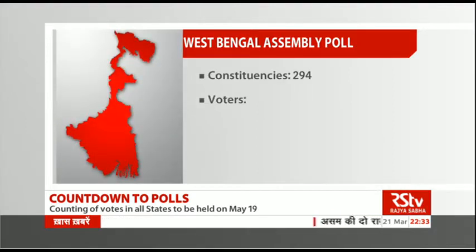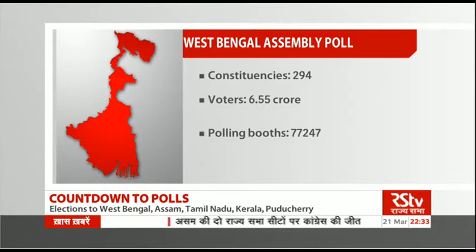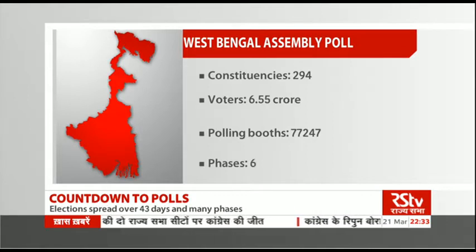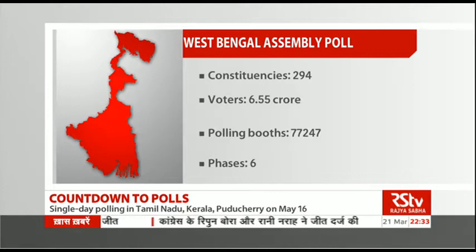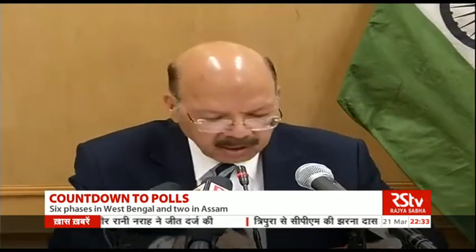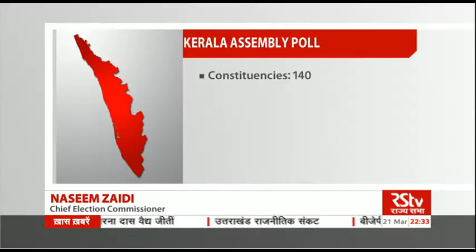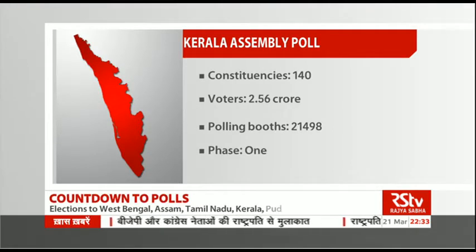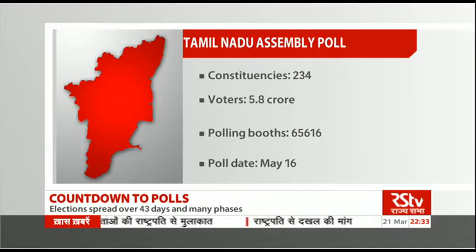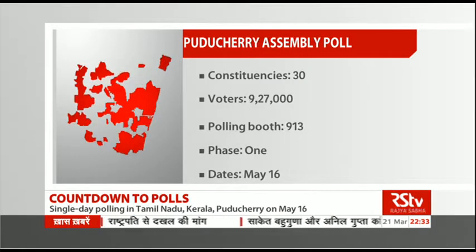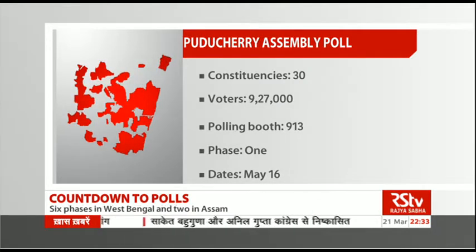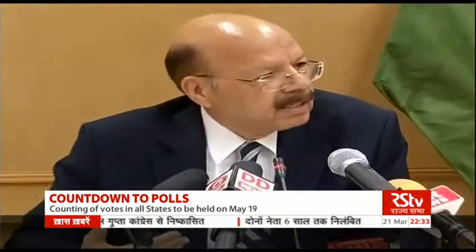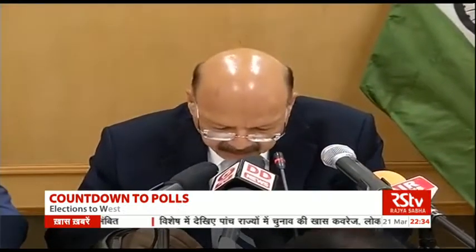West Bengal, which has 294 seats, will have elections in six phases on April 4th, 11th, 17th, 21st, 25th, 30th and the 5th of May. With 140 constituencies, Kerala will have a single phase election on the 16th of May. Tamil Nadu, with 234 seats, and Puducherry with 30 seats, will vote in a single phase poll on the 16th of May. The model code of conduct has taken immediate effect, and these elections will also have the NOTA option of voting for none of the above.